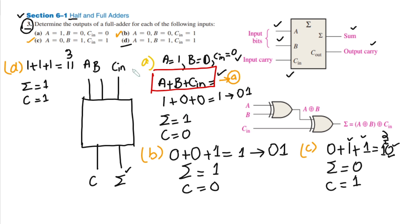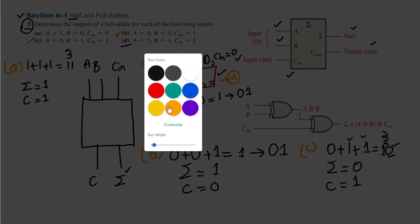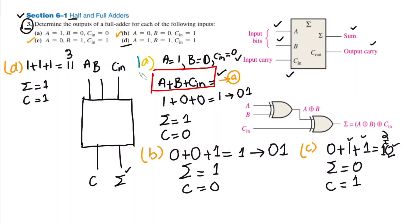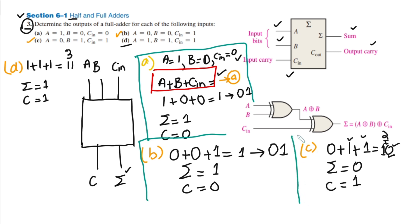So this is the solution for question number 3, in which we have seen different input combinations to a full adder and how to find the carry and summation bits from those combinations. I hope the concepts are now clear. I will see you with more interesting questions in the upcoming video.